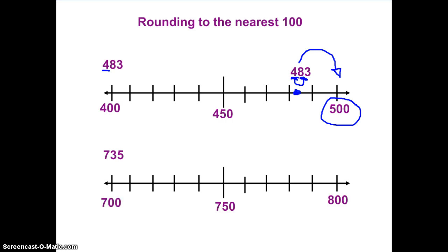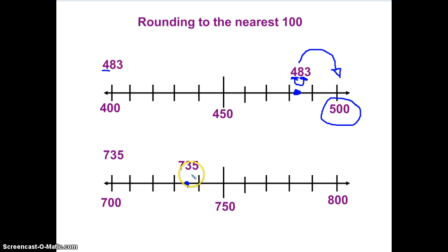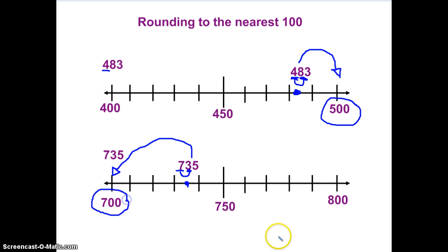Let's try another one. I've gone ahead and added 700, because we're dealing with 700, 800, and the midpoint 750. 735 — let's see: 700, 710, 720, 730. 735 is going to be right about there. I'm dealing with my hundreds, so underline your hundreds place. Let's look right next door — the next door neighbor is three, three tens, 30. So I'm going to let it rest. Four or less, you're going to let it rest — it goes down. So 735 rounds to 700.